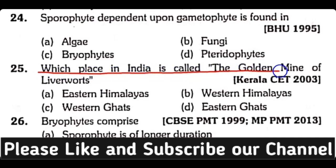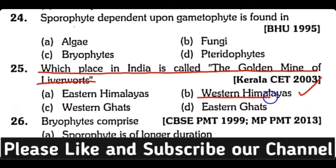Question number twenty-five: which place in India is called the golden mine of liverworts — eastern Himalayas, western Himalayas, western ghats, or eastern ghats? The correct answer is option B: western Himalayas are known as the golden mine of liverworts.